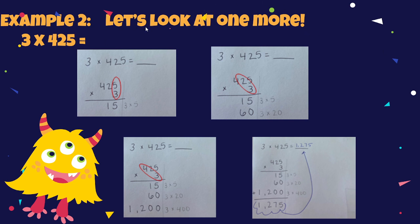And look, let's look at one more. Here's an example of 3 times 4,125. Again, we begin with the 1's place. 3 times 5 is 15. The 10's place to the 1. 3 times 20 is 60. And then to the 100's place. 3 times 400 is 1,200. We take all of those partial products and we add them together to give us 1,275 as a result.